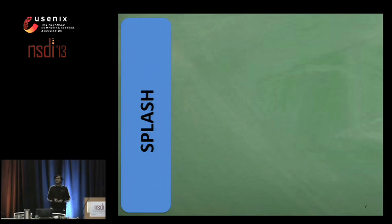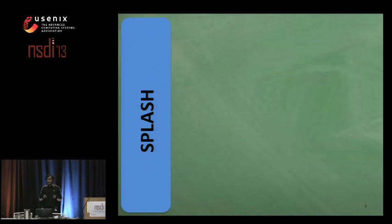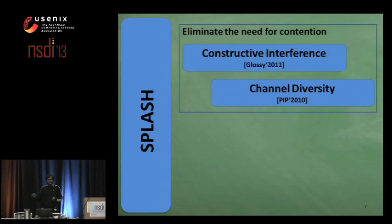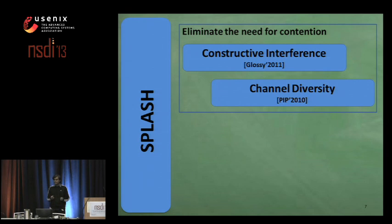Compared to existing solutions, SPLASH reduces dissemination time by an order of magnitude — from minutes to a few seconds — by mainly exploiting constructive interference and channel diversity.